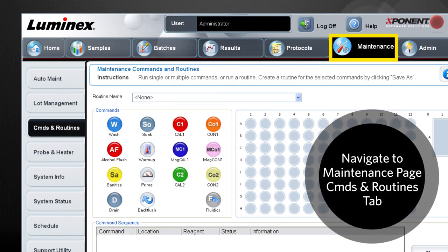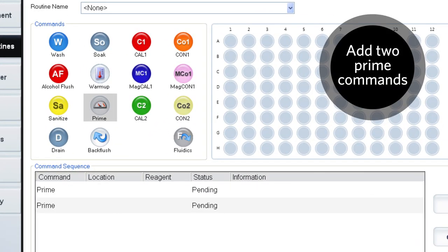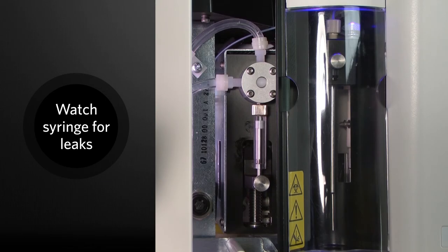Navigate to the Maintenance page, Commands and Routines tab. From the Commands list, click on Prime twice to add it to the command sequence. While the routine is running, watch the syringe for any leaks.